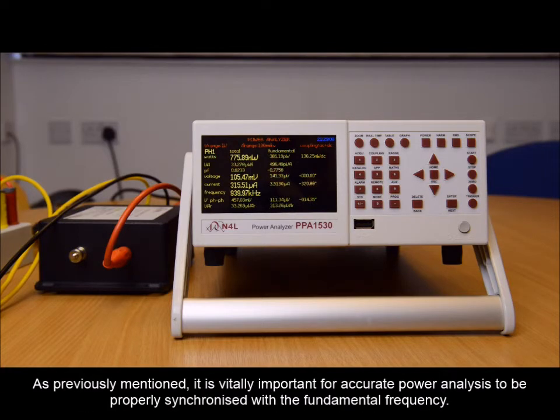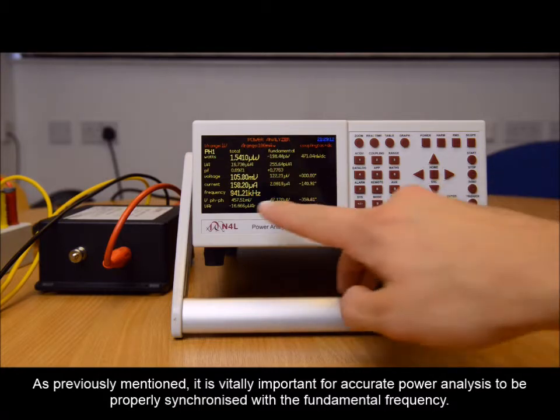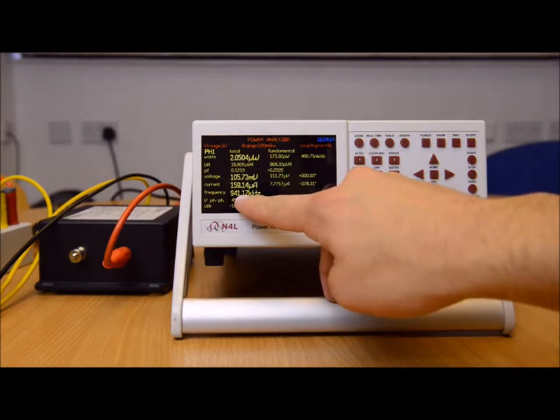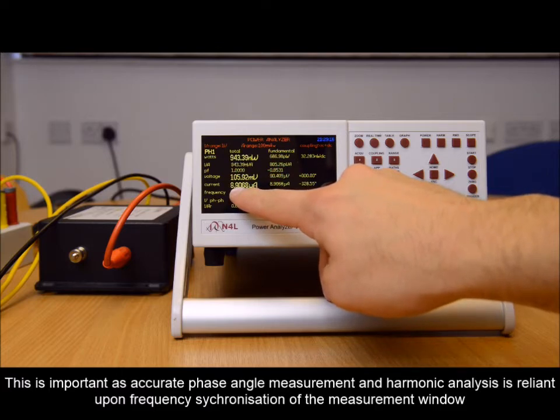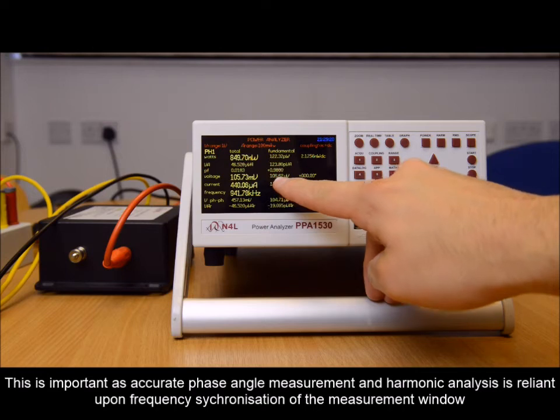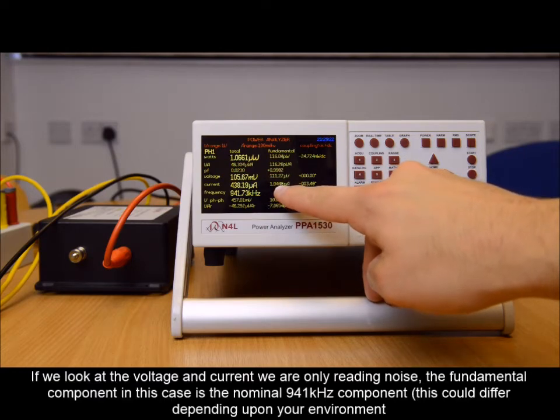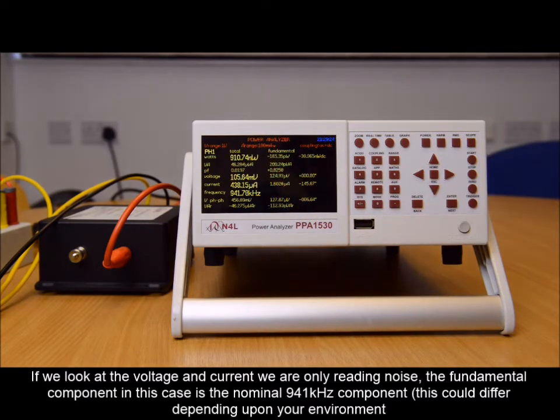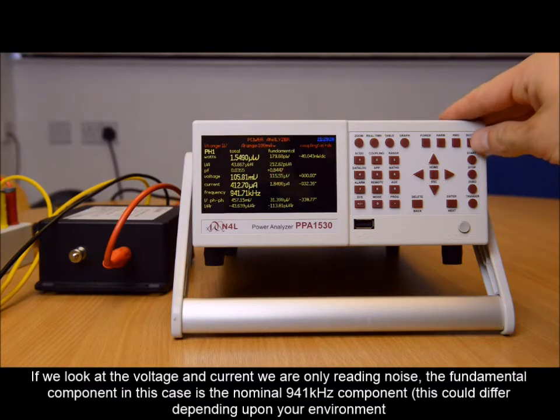As previously mentioned, it is vitally important for accurate power analysis to be properly synchronized with the fundamental frequency. This is important as accurate phase angle measurement and harmonic analysis is reliant upon frequency synchronization of the measurement window. If we look at the voltage and current, we are only reading noise. The fundamental component in this case is the nominal 941 kilohertz.